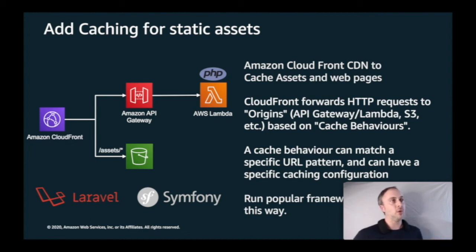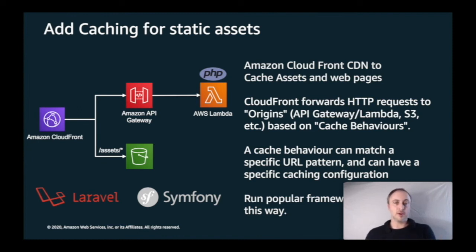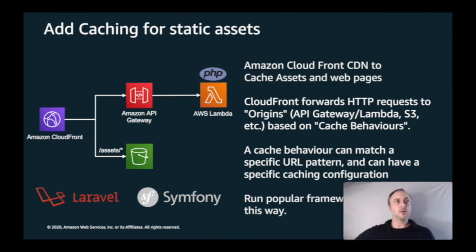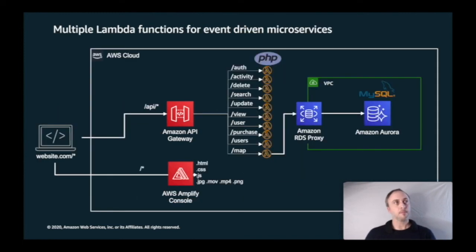What you're able to do is set a rule in CloudFront that says anything for a certain URL like /assets routes directly to S3 for static content — CSS files, JavaScript files, images — and anything else routes via API Gateway to a single Lambda function for dynamic compute. You're able to use Bref in this way to run the popular PHP frameworks you're used to, like Laravel and Symfony. That's one way of building serverless applications with PHP.